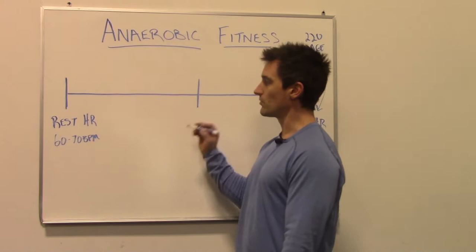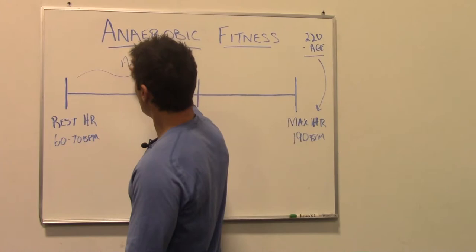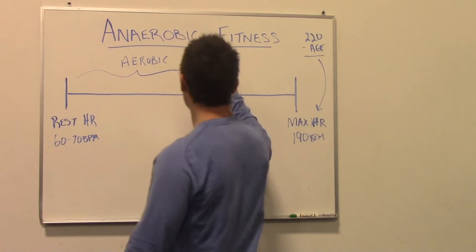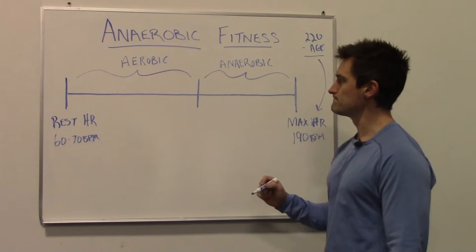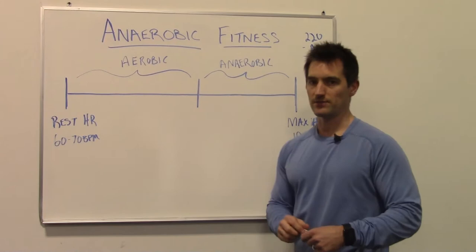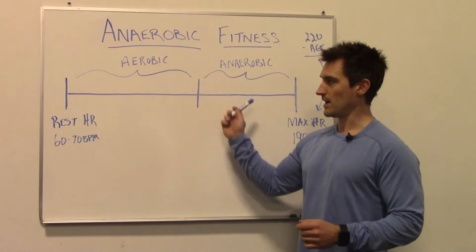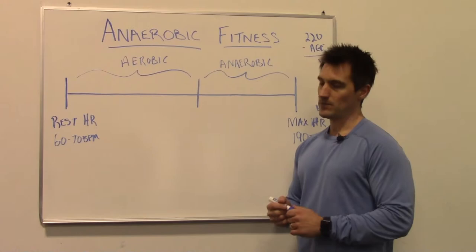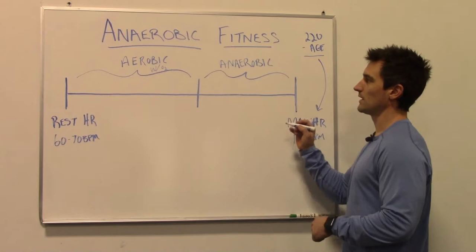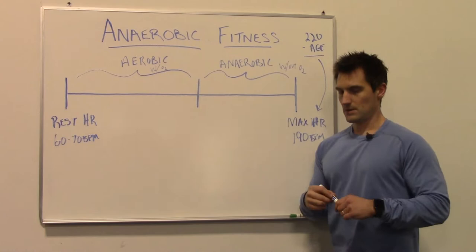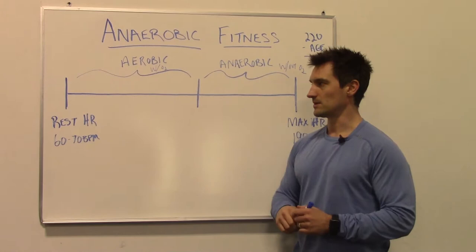On this side of the line you have your aerobic fitness, and on the other side of the line that leaves your anaerobic fitness. When you are aerobic, that means you're using oxygen — the word aerobic means "with oxygen." And of course anaerobic means "without oxygen." That makes it much easier to define this line in the middle.